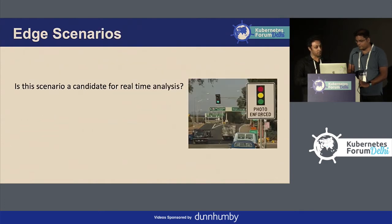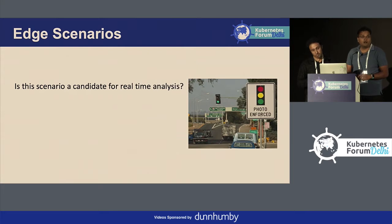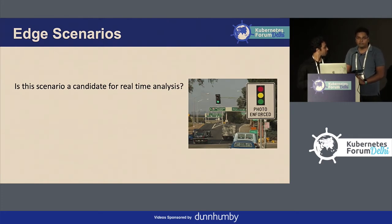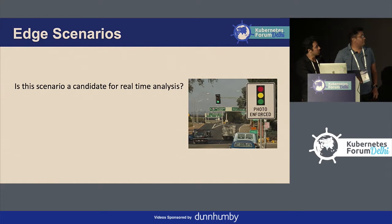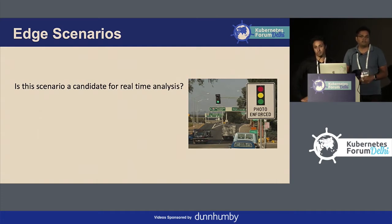Let's start with a few edge scenarios. Quick show of hands — how many of you are familiar with edge compute or edge clusters? Edge clusters are generally set up on customer premises. For AI functionality, you set up edge devices or edge clusters at the data sources. Look at this edge scenario — this traffic signal. Is it a candidate for real-time analysis? For example, if an ambulance arrives at a red signal, will the traffic signal be able to make an intelligent decision to stop the other direction and let the ambulance go?